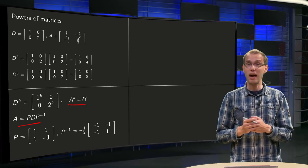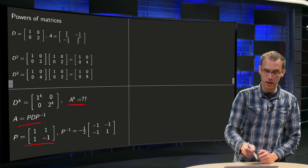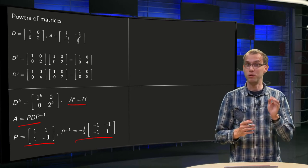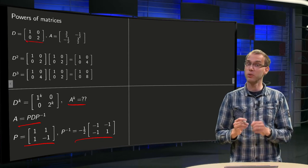In this case we have that A equals PDP inverse, this is particular P over here, and this is P inverse over there. If you don't believe it, just check, compute P times D times P inverse, and check whether you get A.